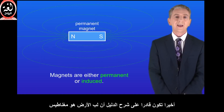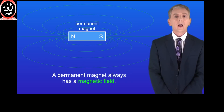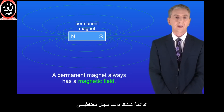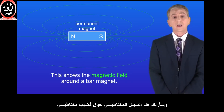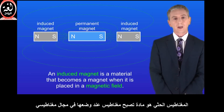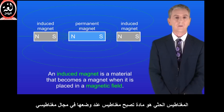In the last video, we saw that magnets are either permanent or induced. A permanent magnet always has a magnetic field, and here you can see the magnetic field around a bar magnet. An induced magnet is a material that becomes a magnet when it's placed in a magnetic field.